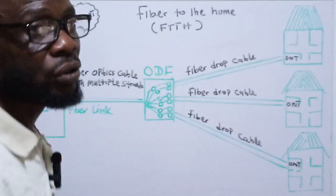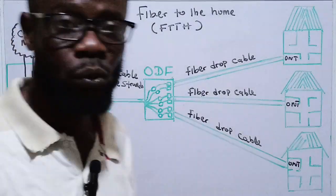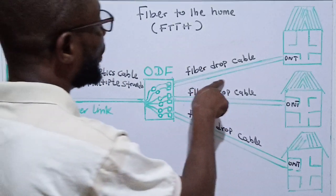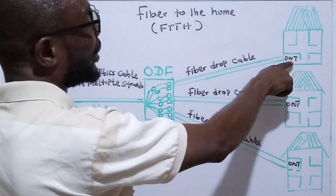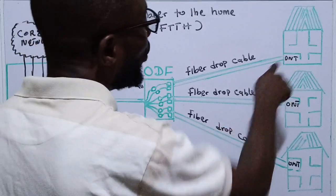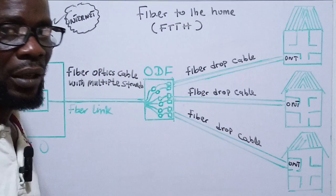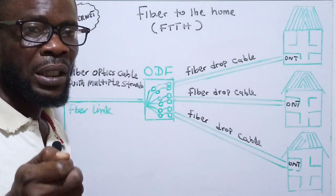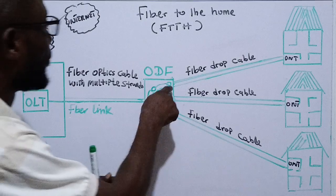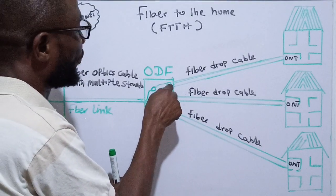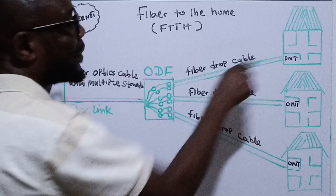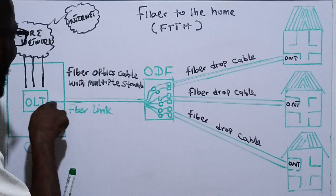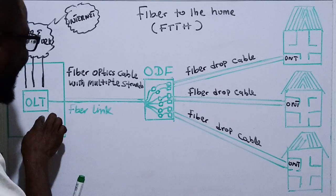From the ODF, a drop cable is run to the customer's house. The drop cable has only two strands — transmit and receive. It connects via a special connector from the Optical Distribution Frame to a device in the customer's home called the Optical Network Terminal, ONT.